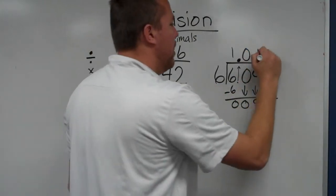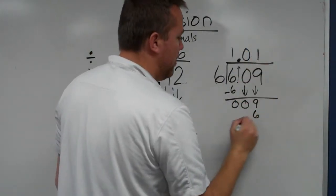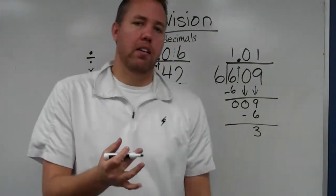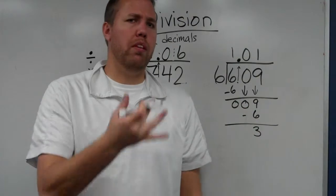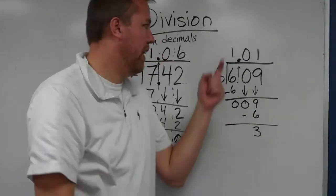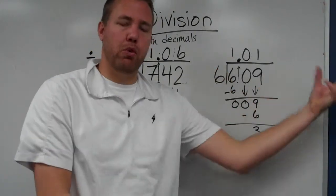Then we bring down 6. 6 goes into 9 one time. 6 times 1 is 6. Sister subtracts and gets a 3. We're looking at 1 and 100th with a remainder of 3 wholes. That doesn't work. That doesn't make sense. How can you have an answer of 1 with a remainder of 3?